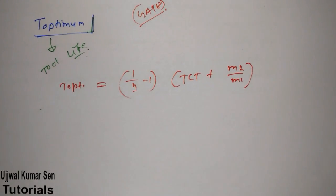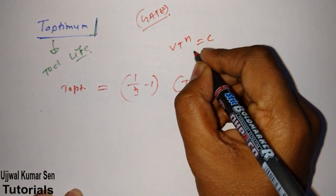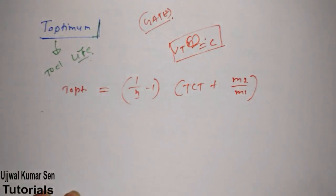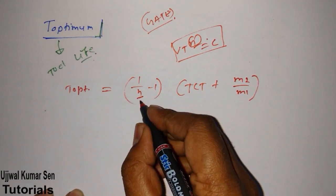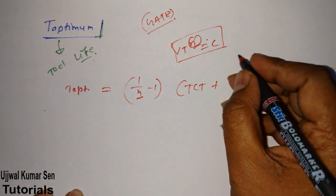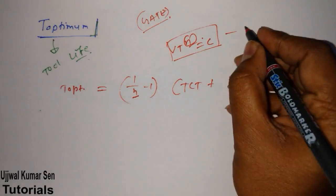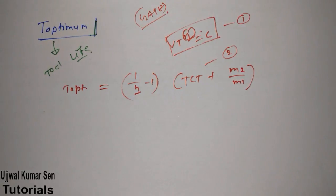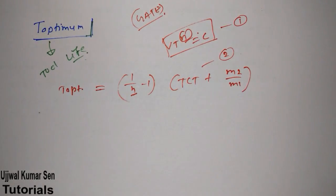What is the formula for T-Optimum basically? T-Optimum is equal to 1 by N minus 1, TCT, I will tell you what it is, plus M2 by M1. I will tell you each and everything, what is N, what is this, what is that. So N is from Taylor's tool life equation: V T to the power N equal to constant. This N is that N.